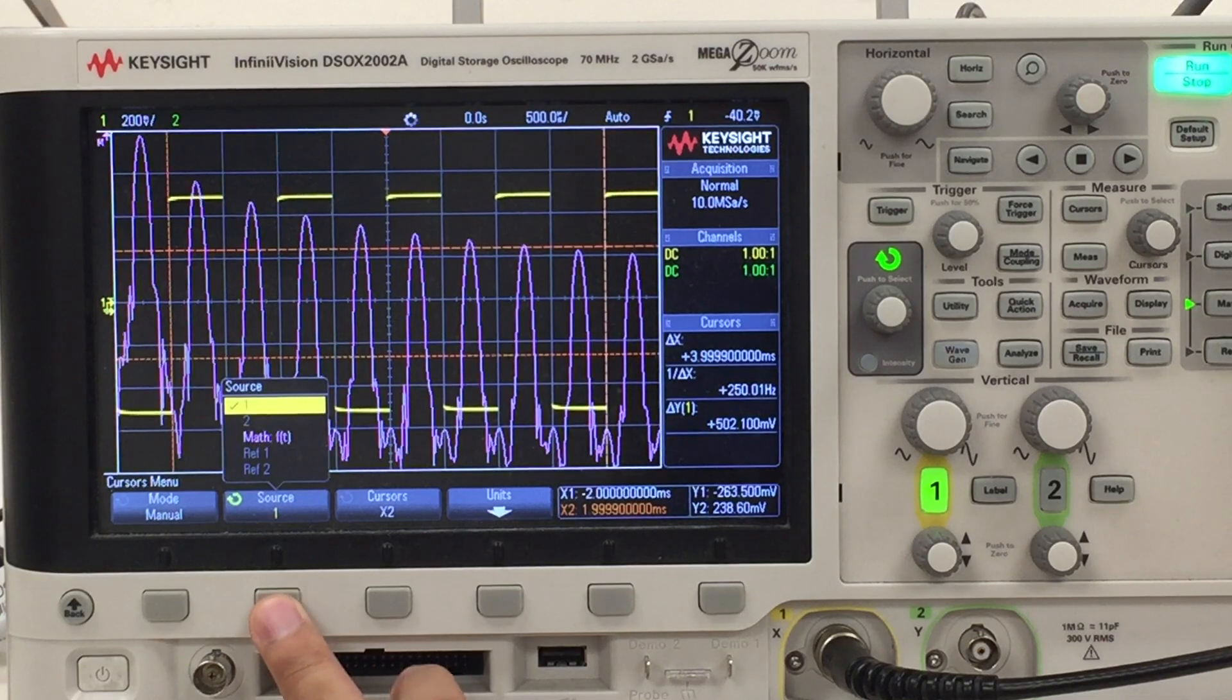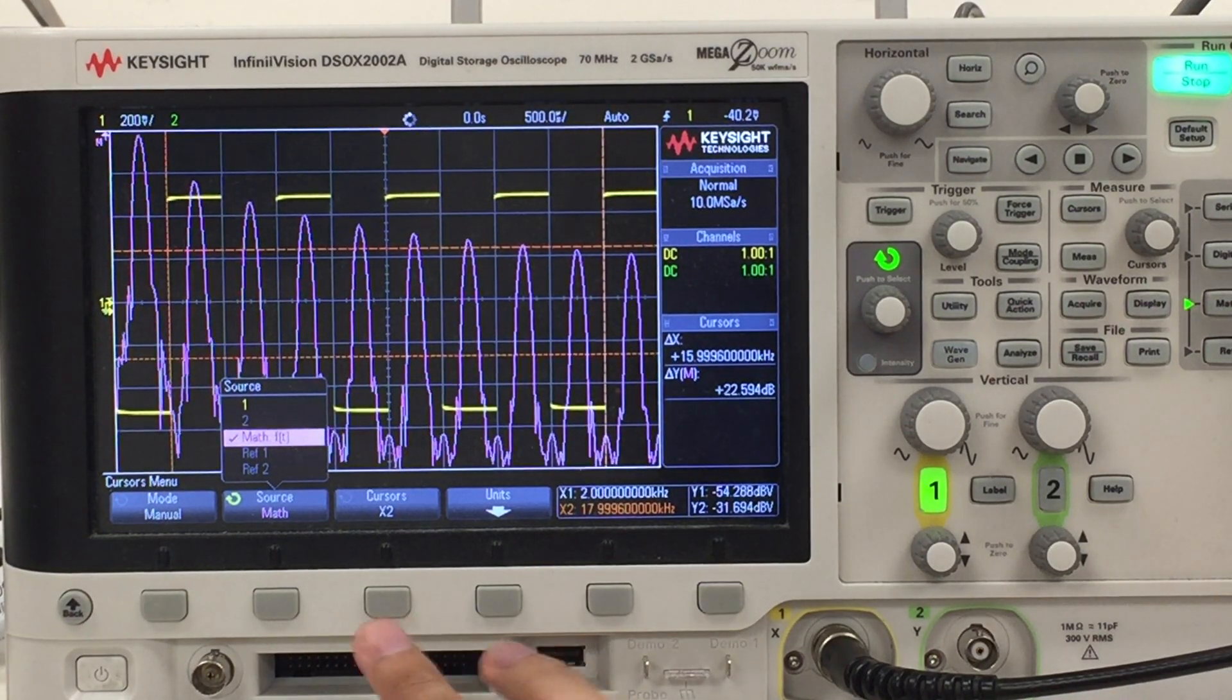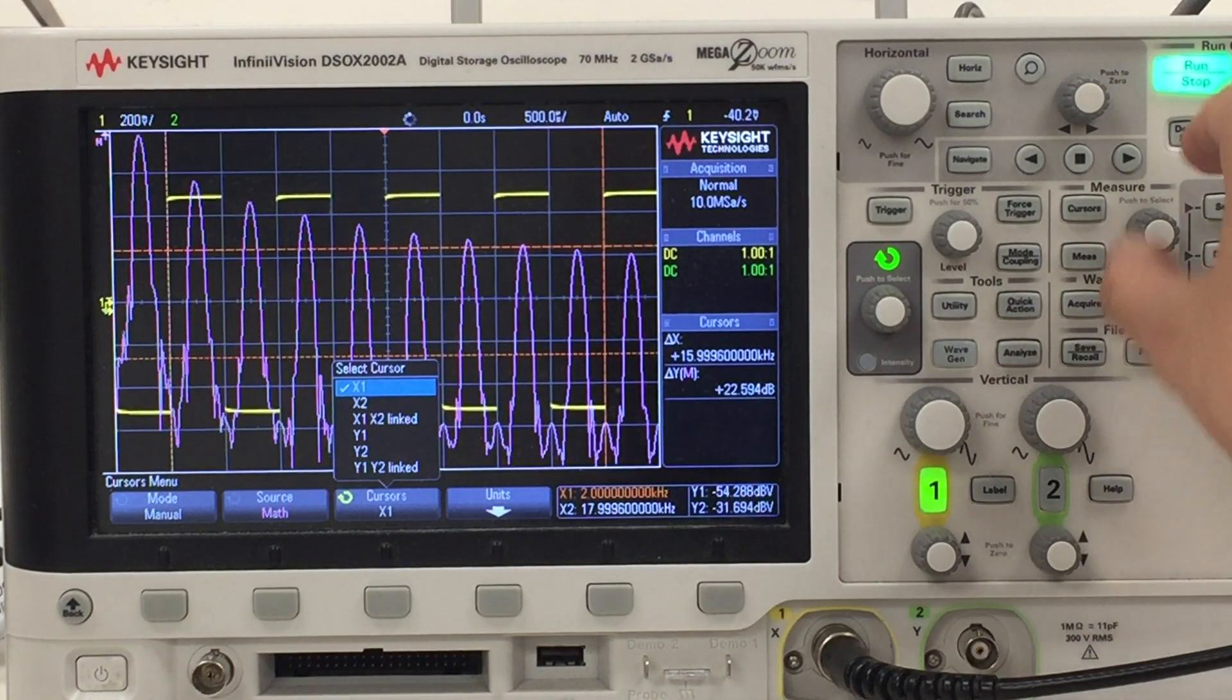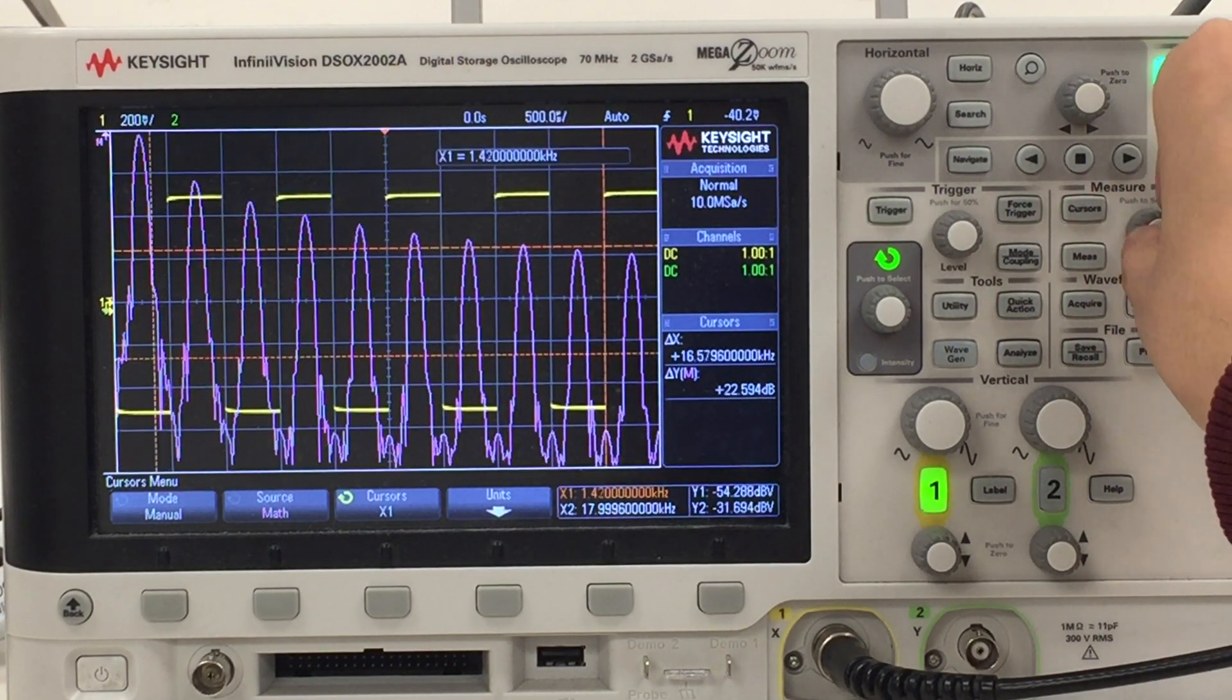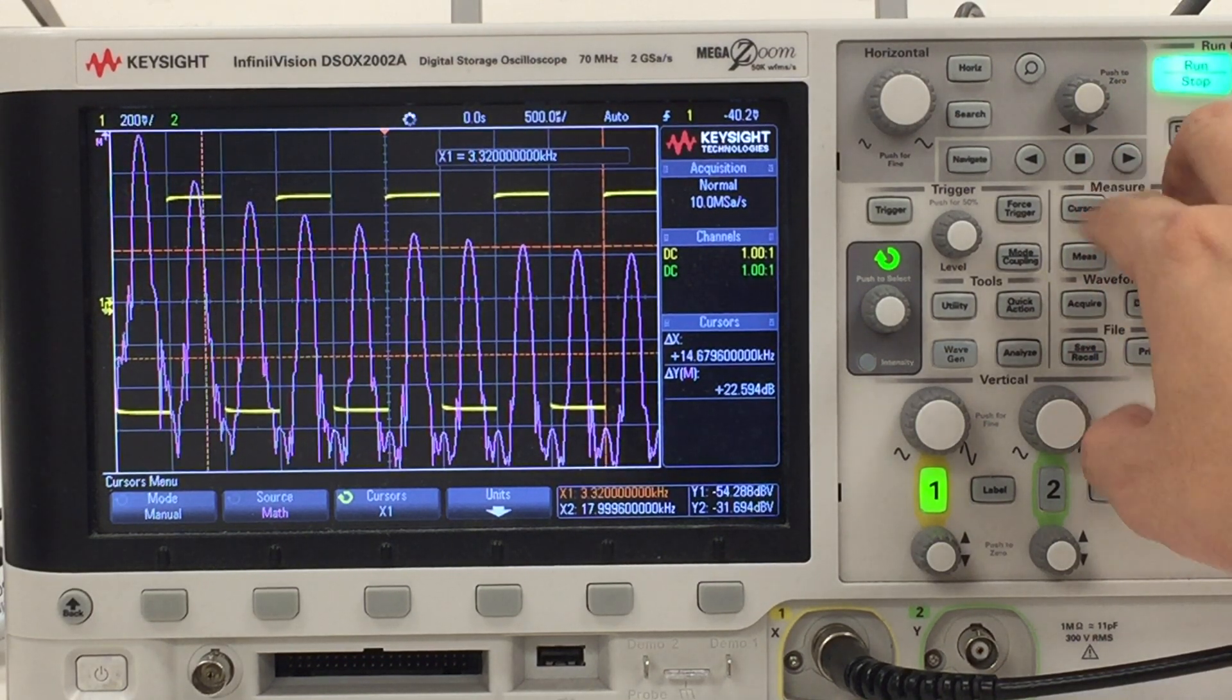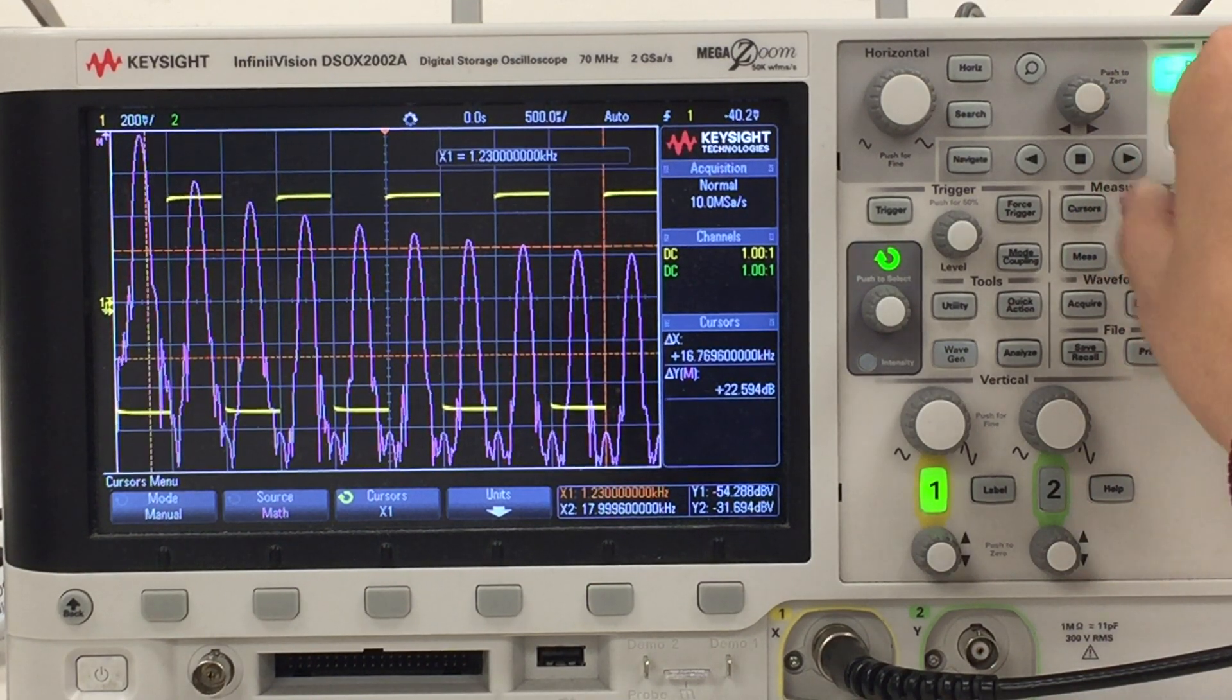The source needs to be on the purple curve, which is the frequency spectrum. Let's do either x1 or x2 and let's move the cursor around. So you can see there's a vertical line moving across the screen as I'm adjusting the cursor. This is actually our cursor. Let's align the cursor with the first peak.